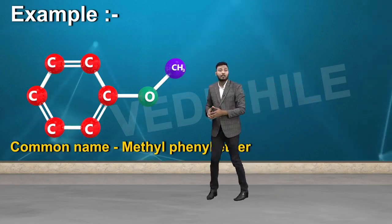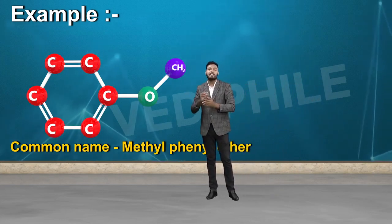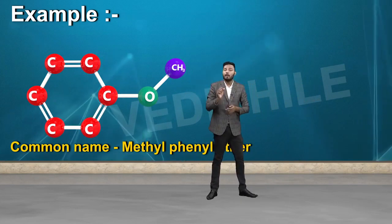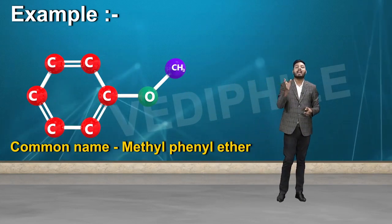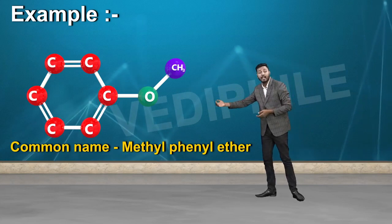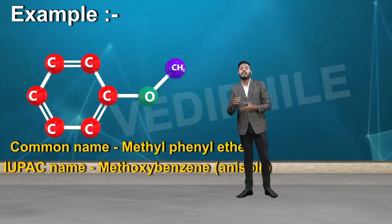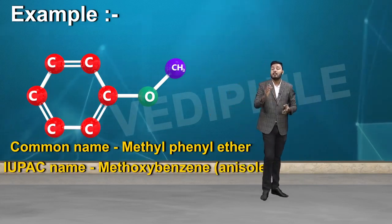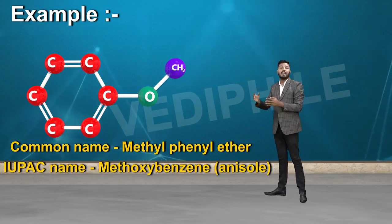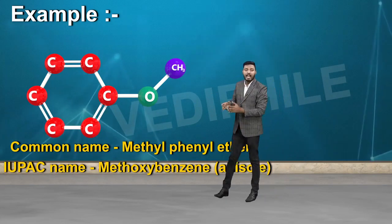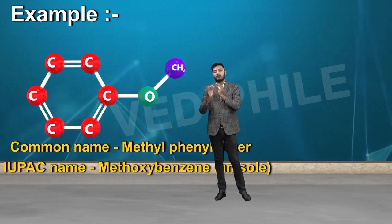Methyl phenyl ether के बाद, IUPAC name की बात करें तो: छोटा part जो होता है उसको हम alkoxy बनाते हैं। So the IUPAC name would be methoxybenzene.